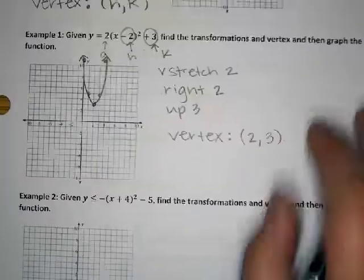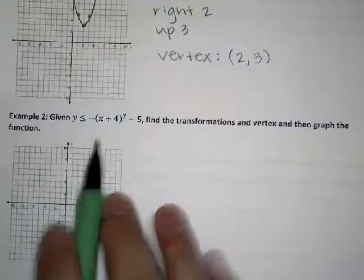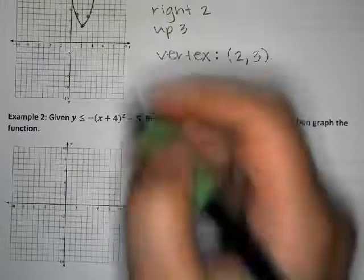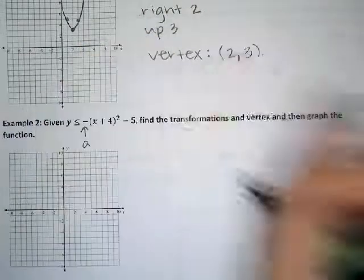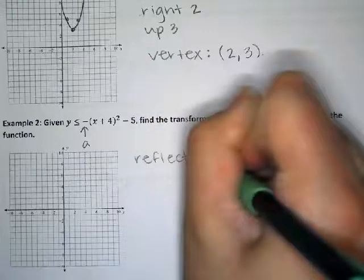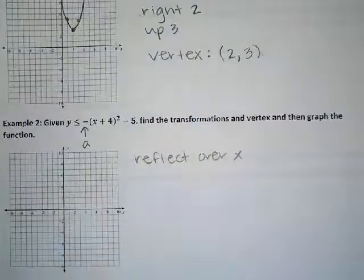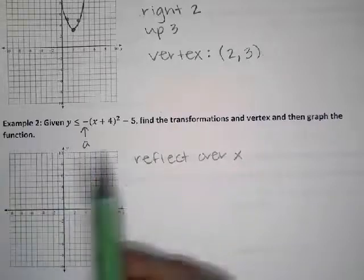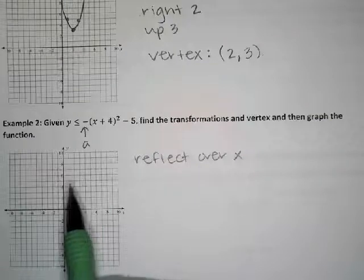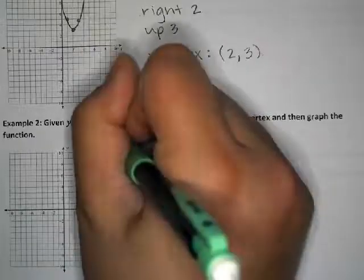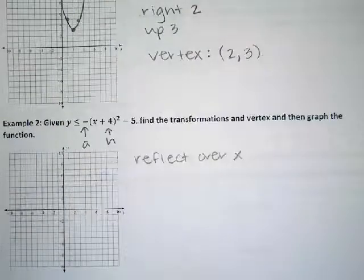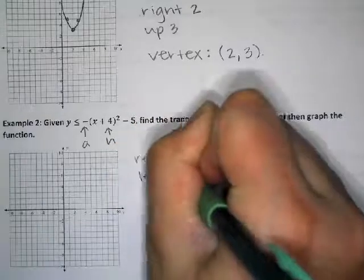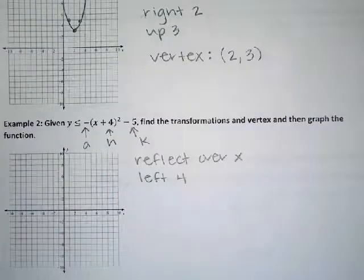Let's look at example two. There's a negative in the front — what does that mean? It reflects over the x-axis. The a value is negative so this graph is reflected over the x-axis, meaning when we draw it, it's going to be upside down. The a value doesn't have a number with it, so the graph is not going to be tall and skinny or short and fat — just normal. The H value is positive 4, which means it goes to the left 4.